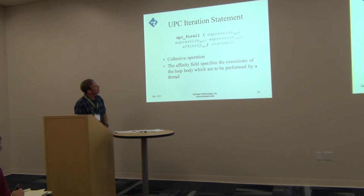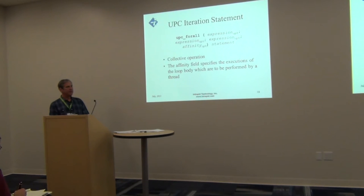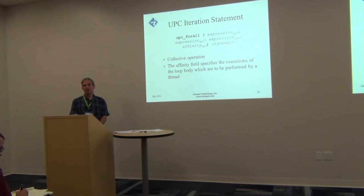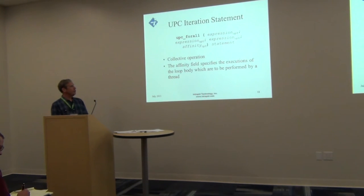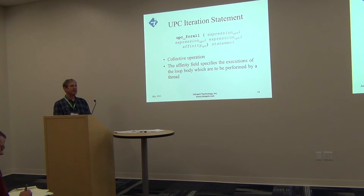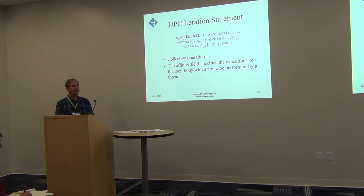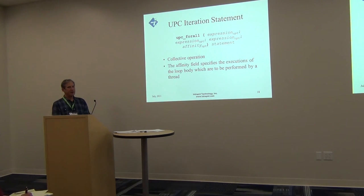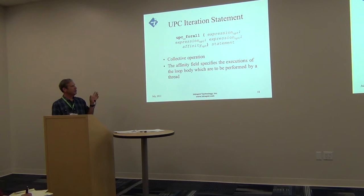Another UPC statement is upc_forall, which must be executed by all threads. It's like a regular for loop except it has an additional affinity expression. If the affinity expression is present, it controls whether the loop body executes on a given thread. A typical form is to put a shared address like &A[i] as the affinity expression; the runtime checks whether the thread component of that pointer matches MYTHREAD, executing the body only when there is affinity. This pattern could be a candidate for compiler optimization, though no current compilers implement that.